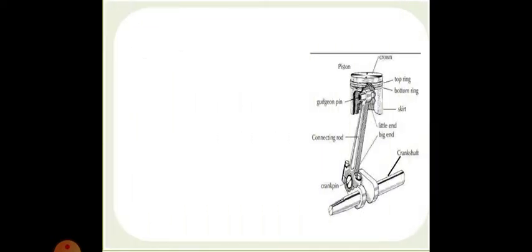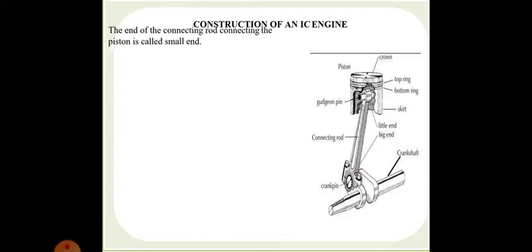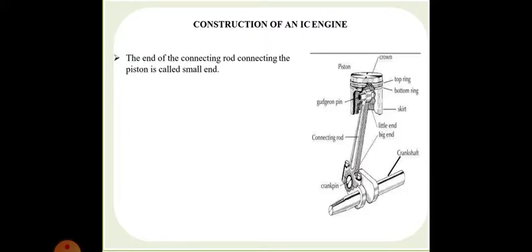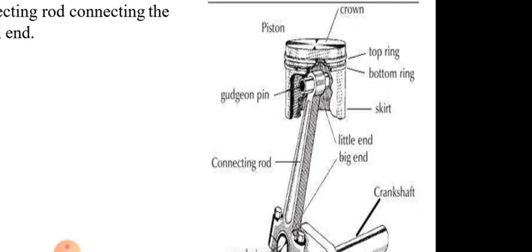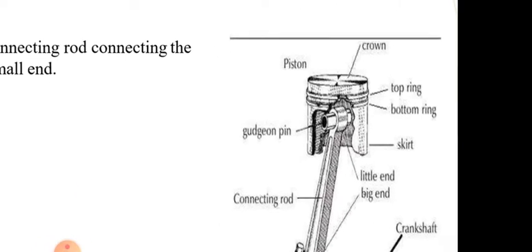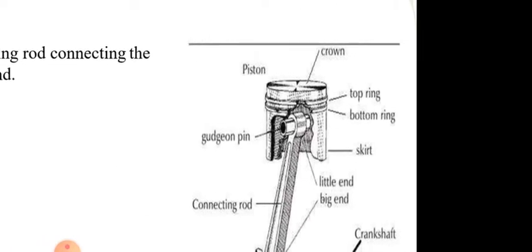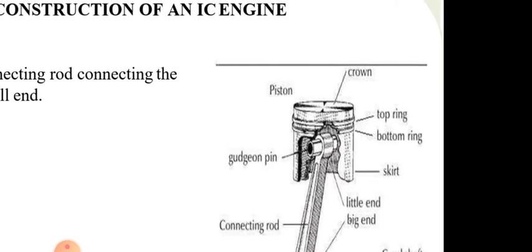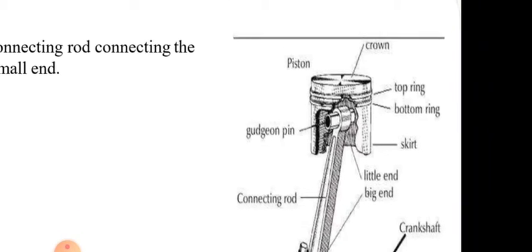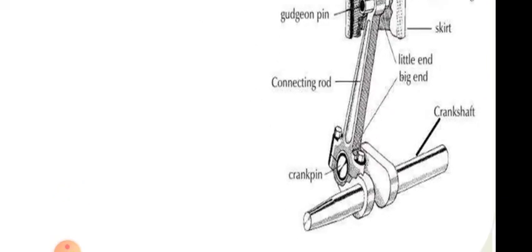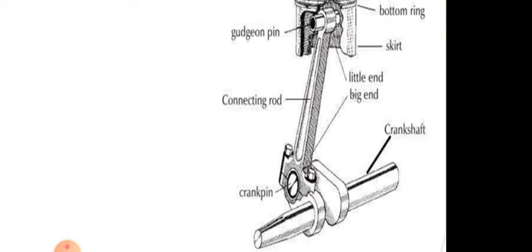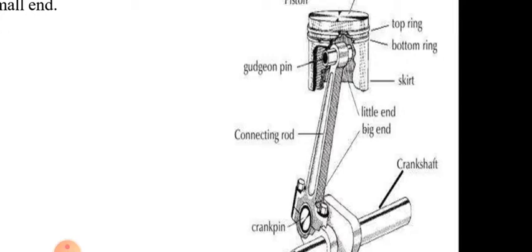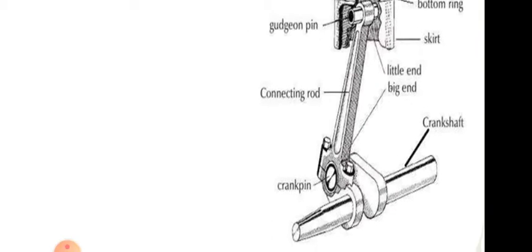Now we come to the construction of the IC engine focusing on the piston and connecting rod. The cross-section of the piston shows the crown — the head of the piston — then the top ring and bottom ring, the skirt, and the gudgeon pin which connects the piston to the connecting rod. The connecting rod has two ends: the little end connected to the gudgeon pin, connecting the piston to the rod; and the big end connected to the crank pin, which is connected to the crankshaft.